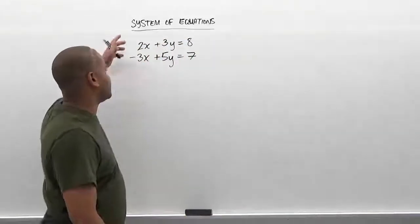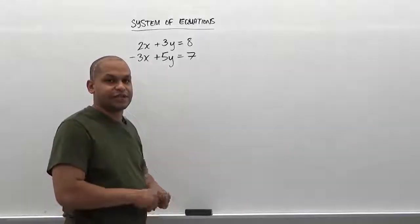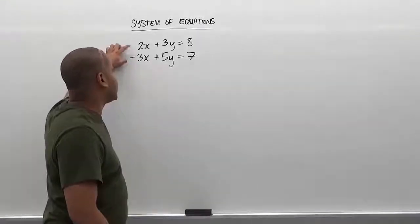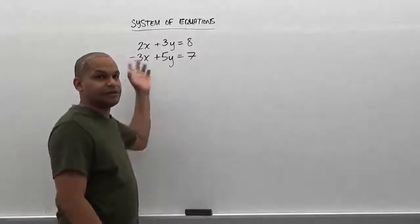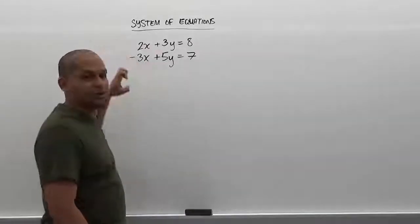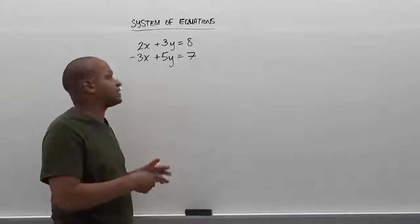The first thing we want to do is look at which pair of variables are easier to cancel out. Being that we have a positive and a negative x here, we're going to use the x terms. Also, they have the smaller set of numbers so it makes the magnification easier.